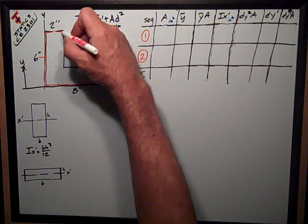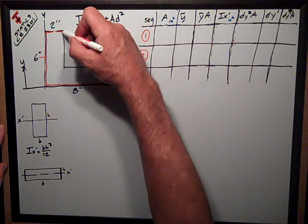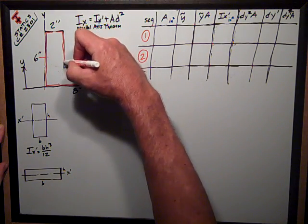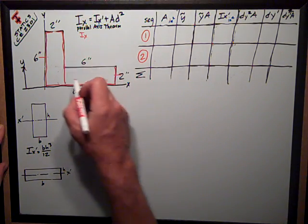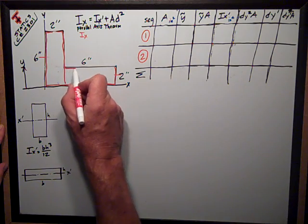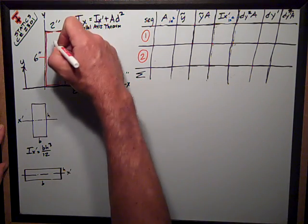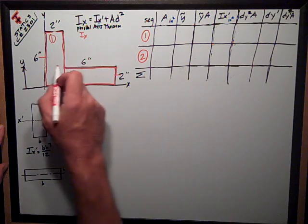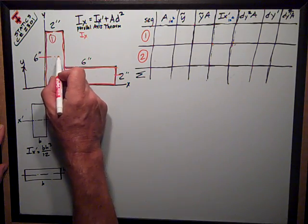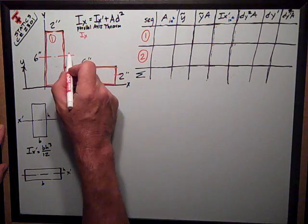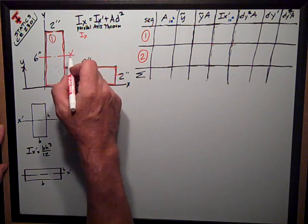So, I want to break this shape up into two rectangles, both of them are 6 by 2. I'm going to call this area 1, draw this little line here, that's the centroid of that shape, of that rectangle, ix prime.